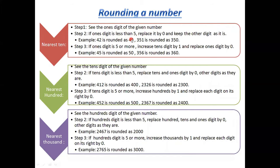If the ones digit is 5 or more, increase the tens digit by one and replace the ones digit with zero. For example, 45 — ones digit is 5, so tens digit 4 becomes 5, giving 50. And 356 rounds to 360.